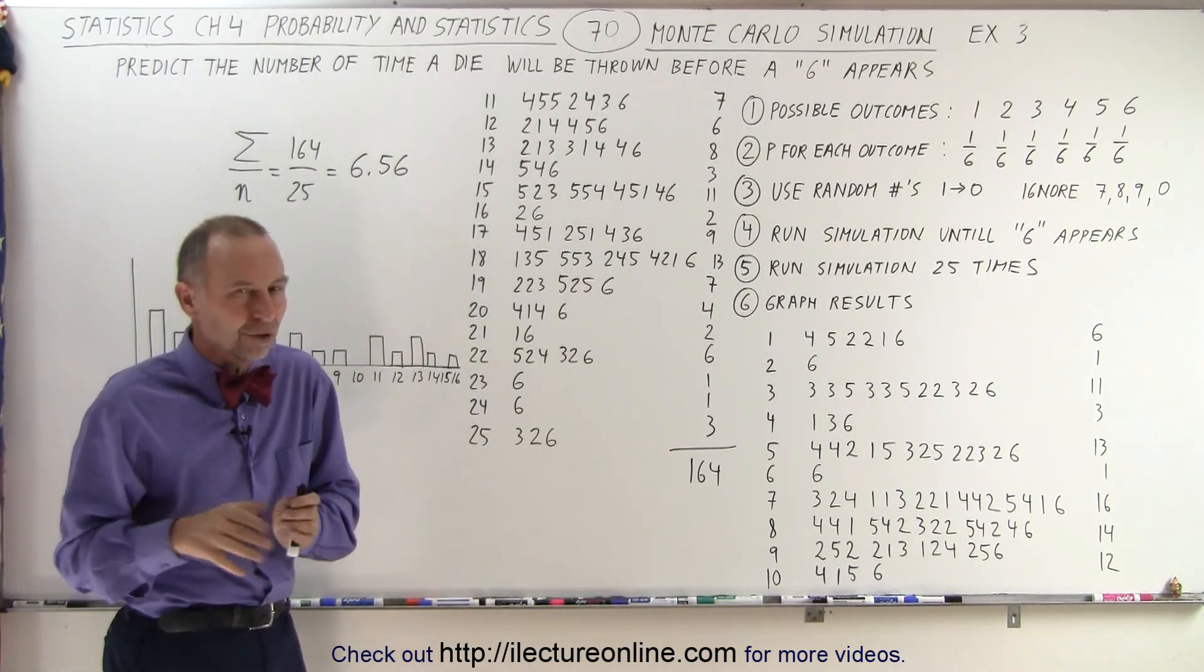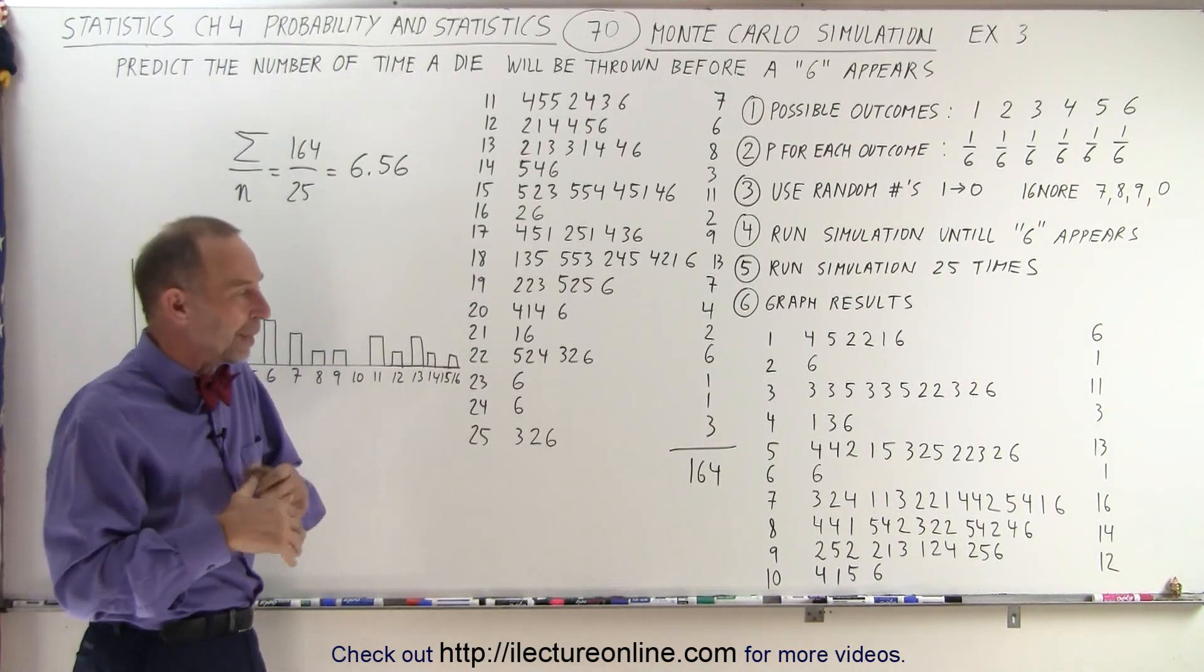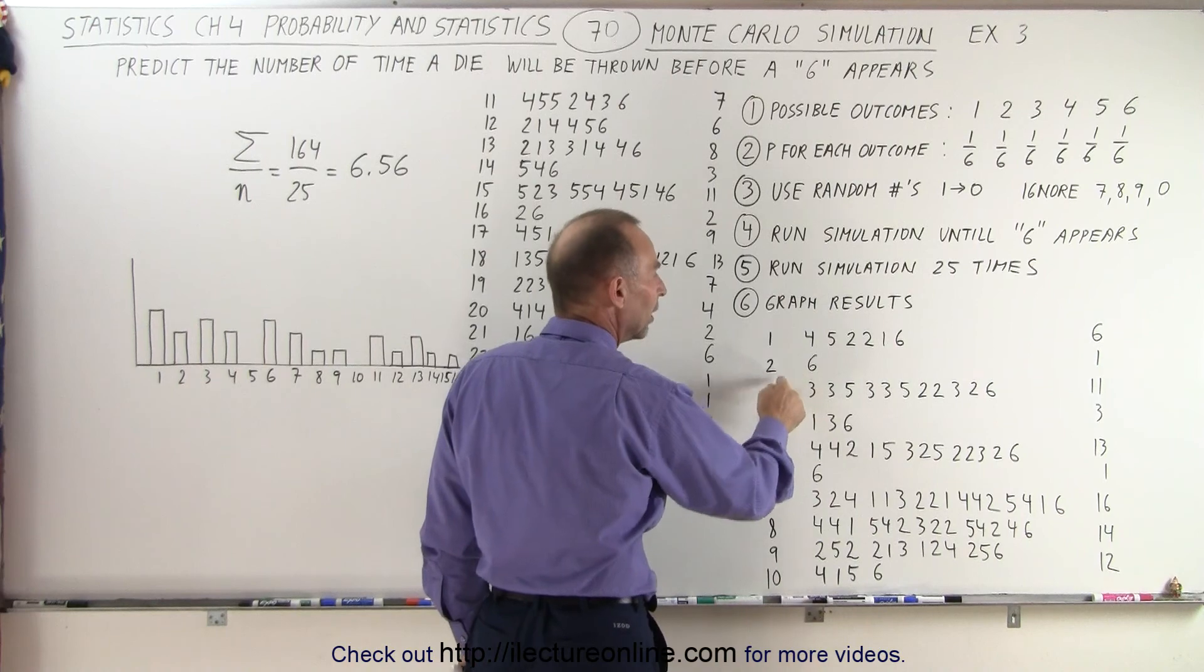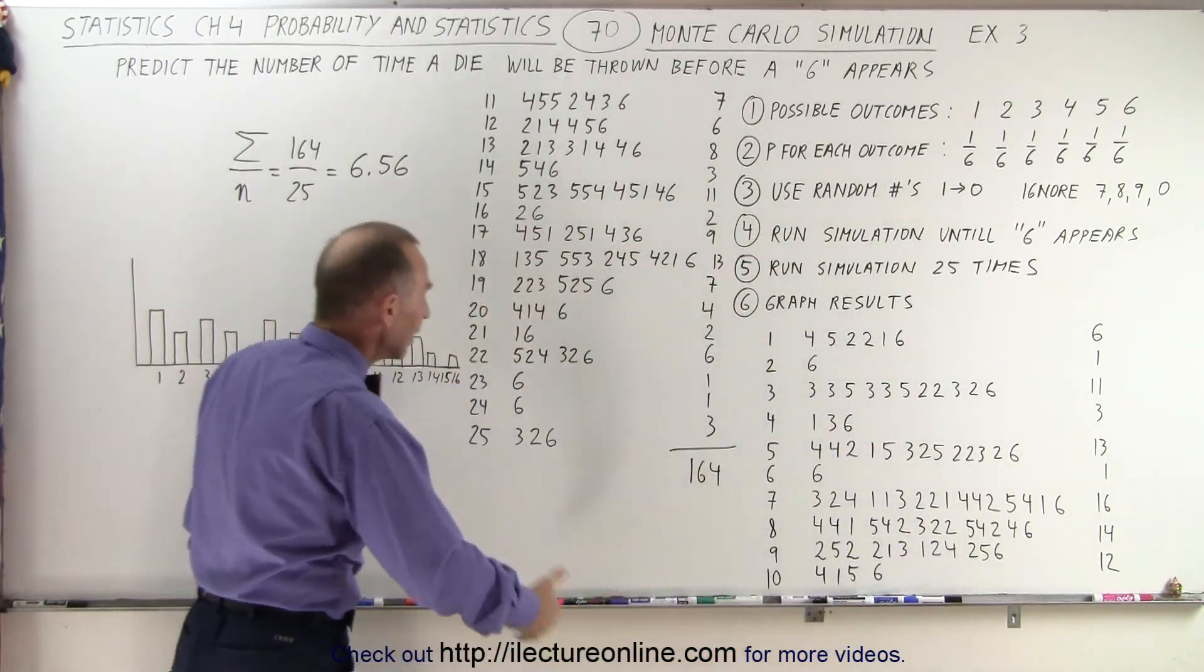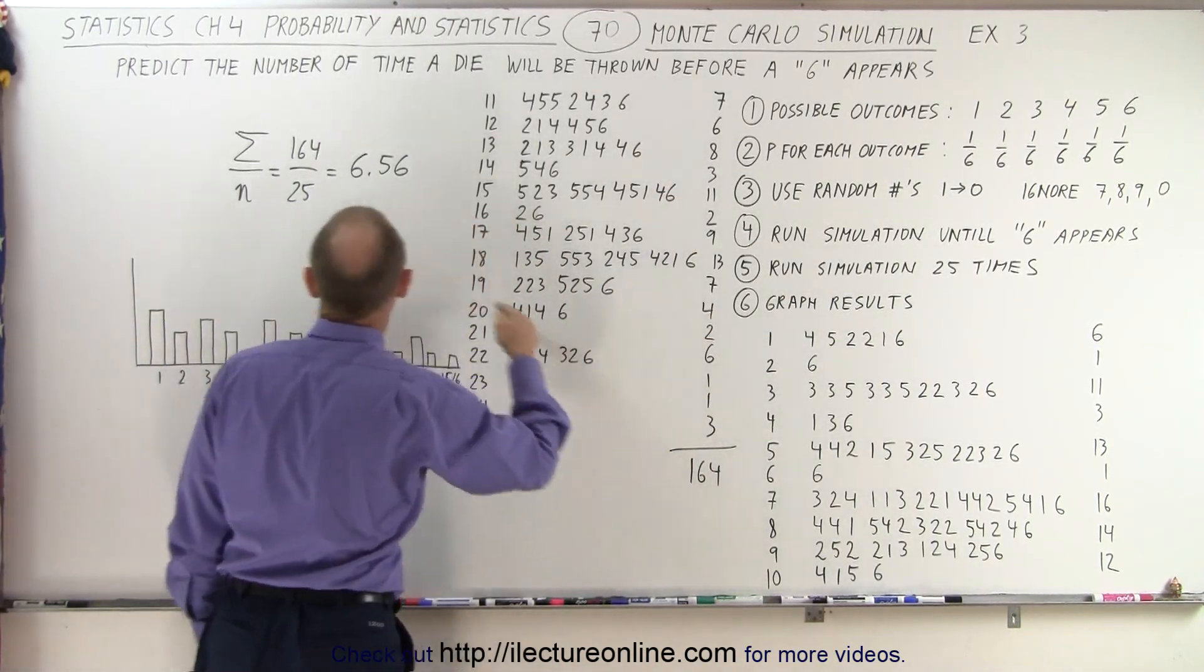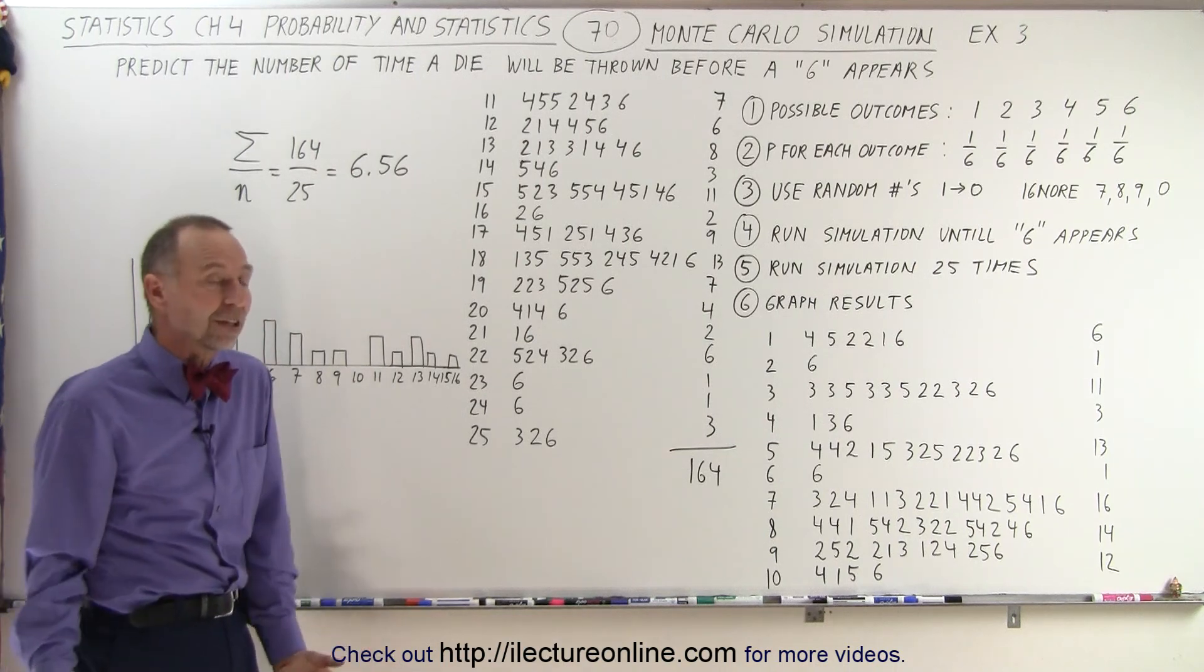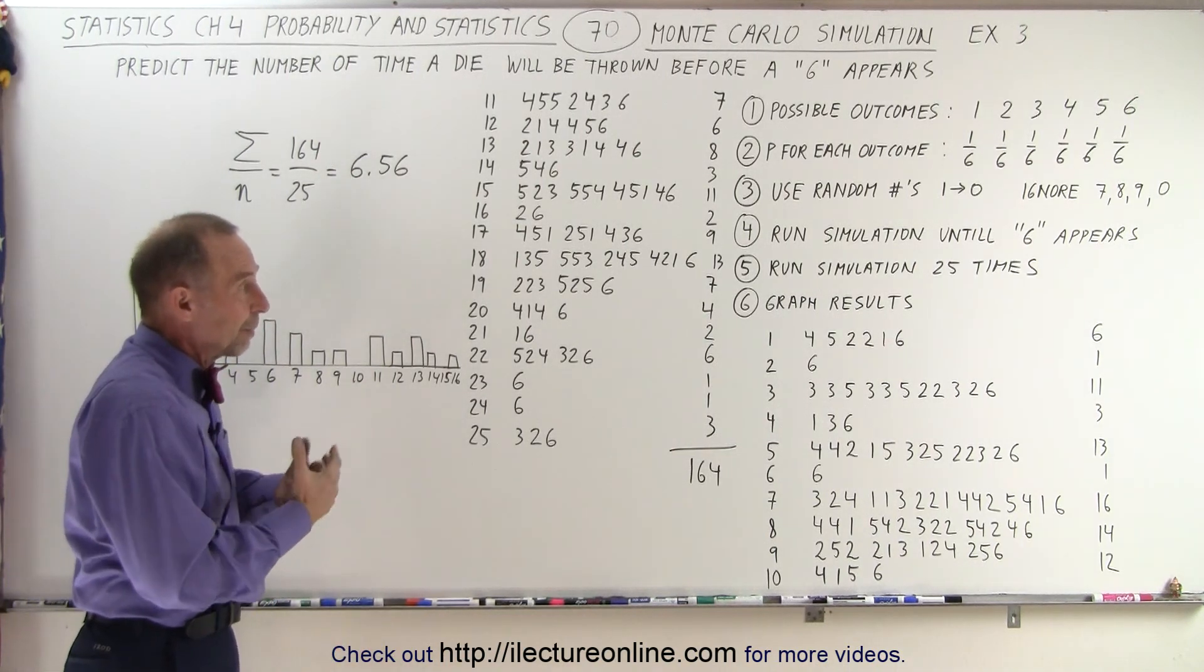So this is what it looked like. Instead of using a random number generator I used some dice and that made it a lot faster. It turns out that the first time it took six throws, then it took one, then it took eleven, then it took thirteen, and so forth. When we did it 25 times, we summed up all the number of times it took before a six appeared—that was 164 altogether for 25 tries, for an average of 6.56, which is fairly close to what we'd expect, about a six.